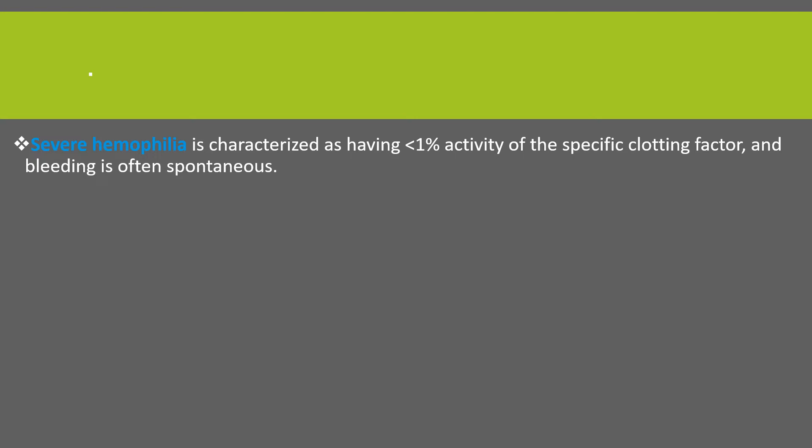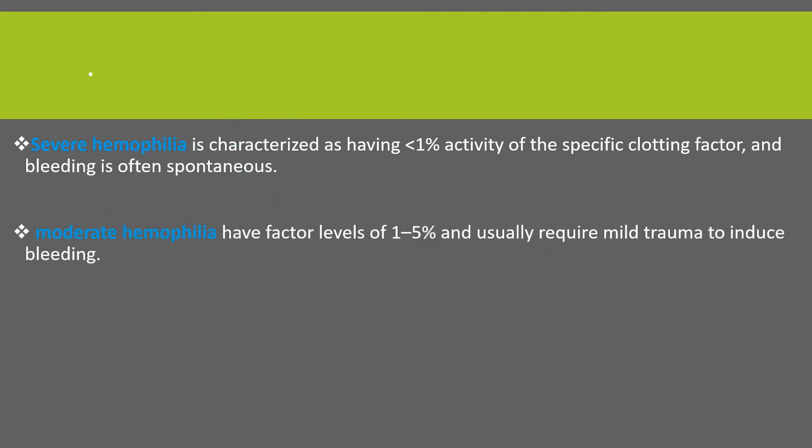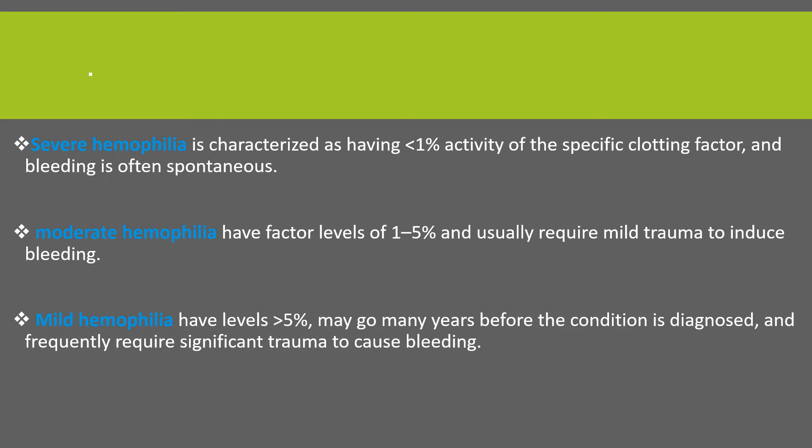When classifying hemophilia by severity: severe hemophilia is characterized by less than 1 percent activity of the specific clotting factor, and bleeding is often spontaneous. Moderate hemophilia involves a factor level of 1 to 5 percent, usually requiring mild trauma to induce bleeding. Mild hemophilia has levels greater than 5 percent, and patients may go many years before the condition is diagnosed, frequently requiring significant trauma to cause bleeding.